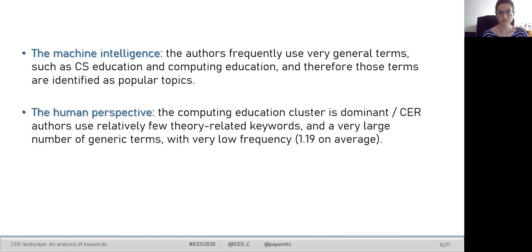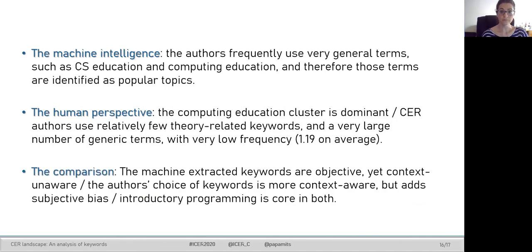On the other hand, the strongest cluster defined by the human expert was the computing education cluster, comprising generic keywords that relate to education. We see the differences between human text annotations and machine text mining results, with human authors using terms to describe their work in a more abstract and generic fashion, having in mind all the details of their work, and introducing some kind of subjective bias.